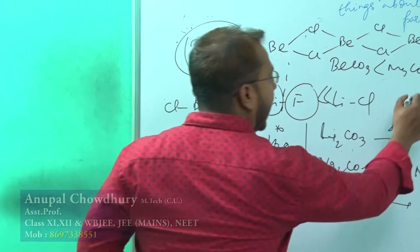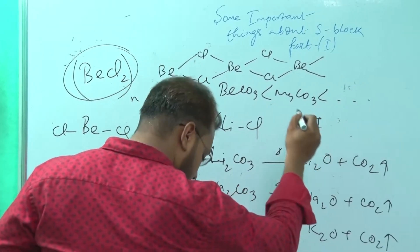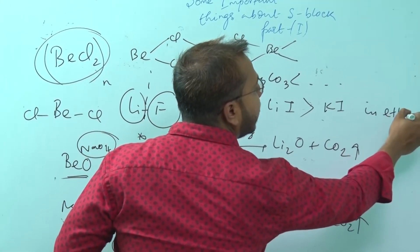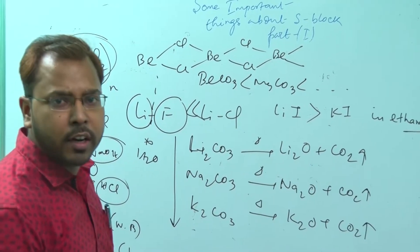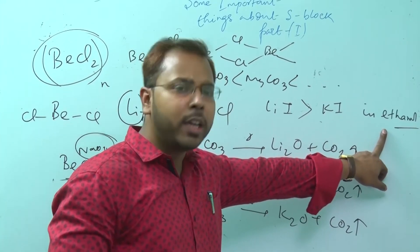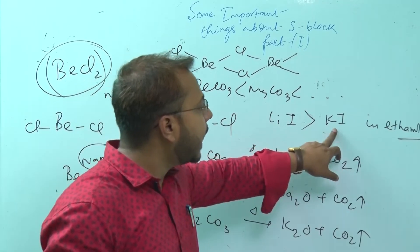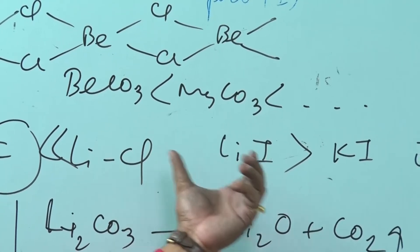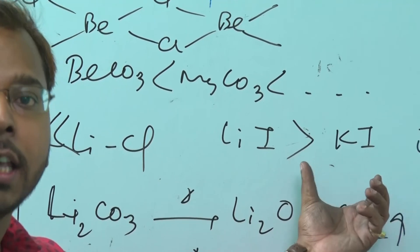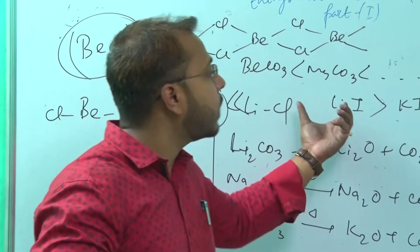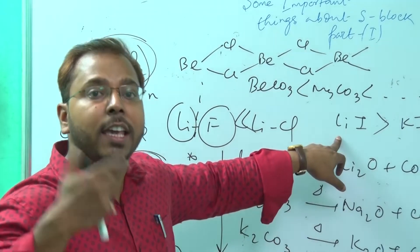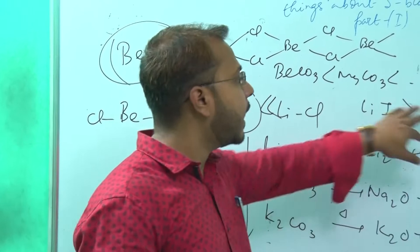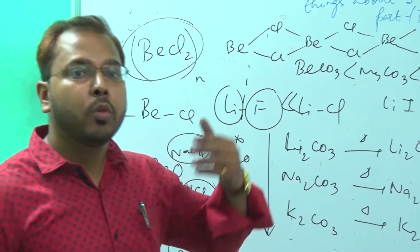Why is LiI more soluble than KI in ethanol? Ethanol is a weakly polar or non-polar solvent. LiI has much higher charge density than KI, so the phi value (polarizing power) of LiI is much greater. This means LiI is more covalent, while KI is more ionic. As covalence increases, solubility in non-polar solvents increases. That is why LiI is more soluble than KI in ethanol.